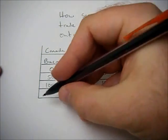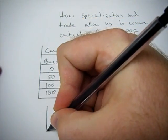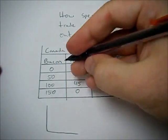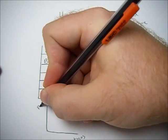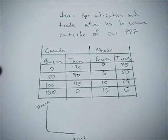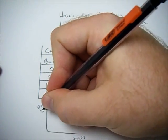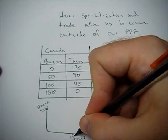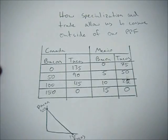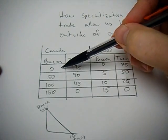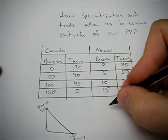So first, we can draw their PPFs relatively quickly, and these are going to be kind of small. So for Canada, we got tacos and bacon. We know that they can produce up to 150 bacon and 135 tacos, and we'll connect those two points because the relationship is linear.